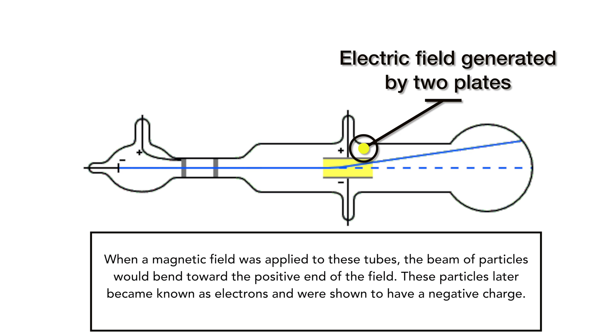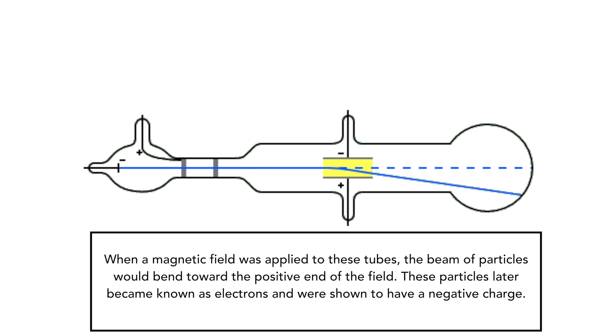When a magnetic field was applied to these tubes, the beam of particles would bend toward the positive end of the field. These particles later became known as electrons and were shown to have a negative charge. These experiments were some of the first to show the presence of charged particles that existed as part of the atom.